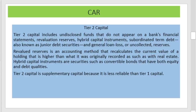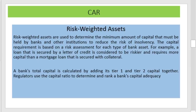Tier 2 capital is supplementary capital because it is less reliable than Tier 1 capital. Risk-weighted assets are used to determine the minimum amount of capital that must be held by banks to reduce the risk of insolvency — that is, the minimum capital needed to avoid insolvency.